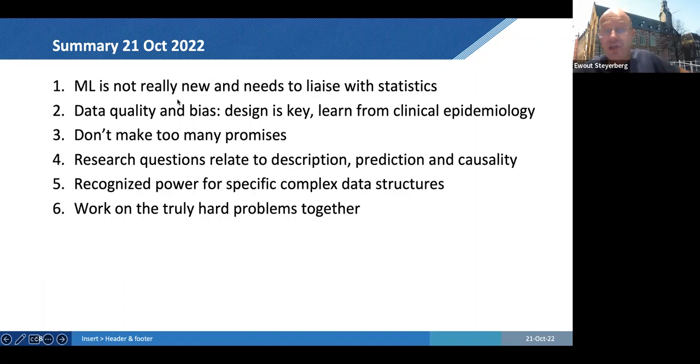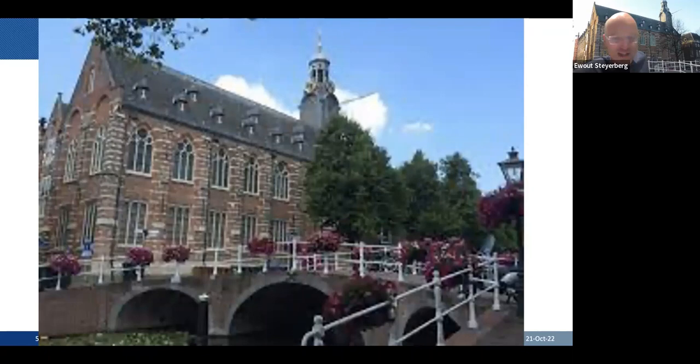So this is my summary then. My statement is that machine learning is not really new, needs to liaise with statistics, not be so like we know better. Data quality and bias design is the key issue, and we should learn from clinical epidemiology. They have a long tradition in assessing quality of the data and biases, like in the Cochrane review that I showed, that initiative. And don't make too many promises, and then at least don't make promises you cannot keep. The research questions need to relate to description, prediction, or causality. That's increasingly difficult. And we need to recognize the power for specific complex data structures like images and natural language. And then, yeah, we should work on the truly hard problems together. I want to end in a positive way. So I thank you all for your attention. This is the university building that we started off with our chat a bit. Thanks for joining in. I'm happy to engage in some further discussion.